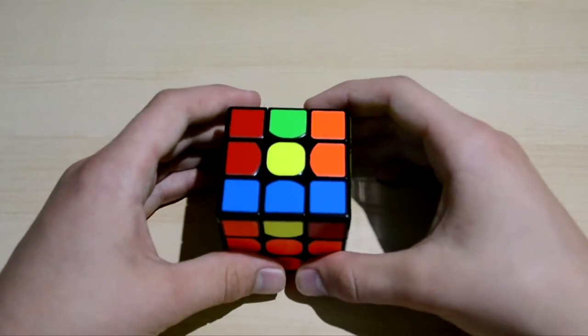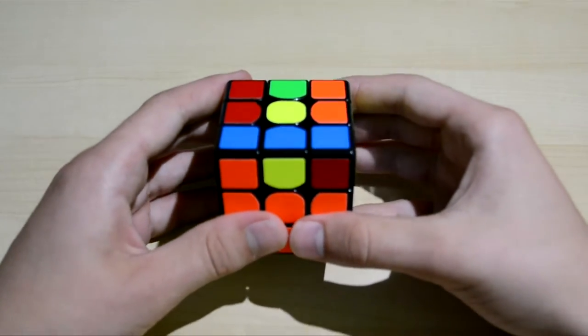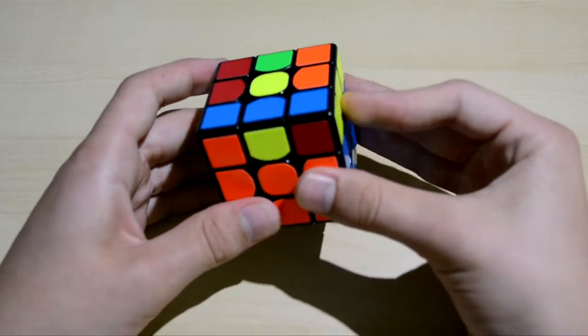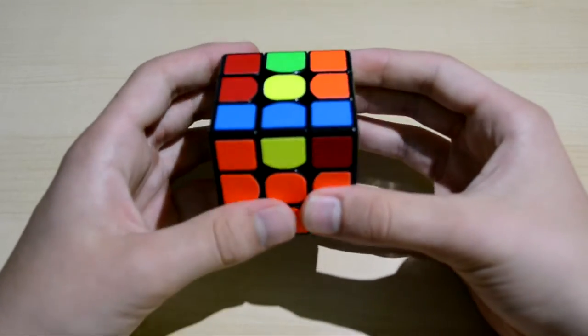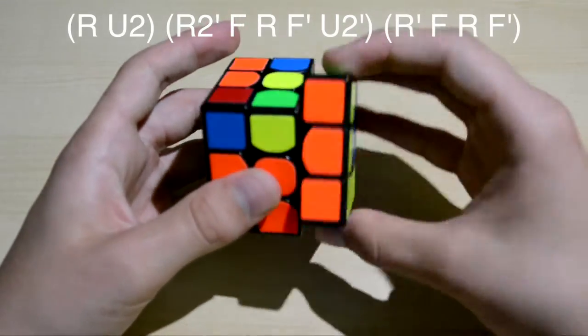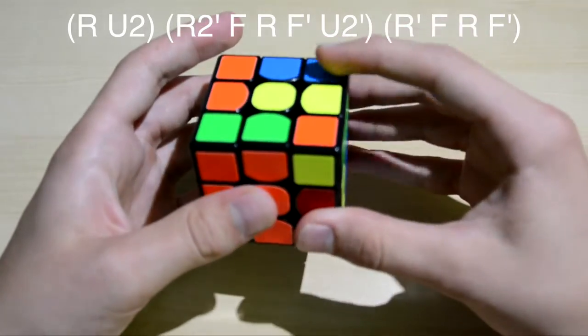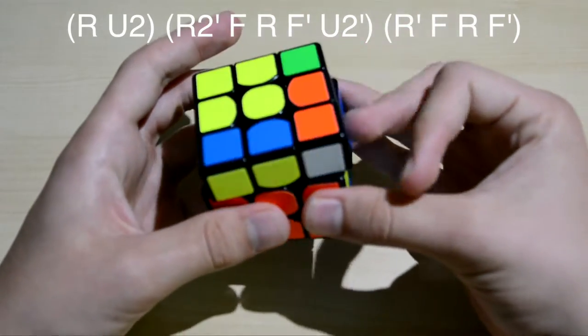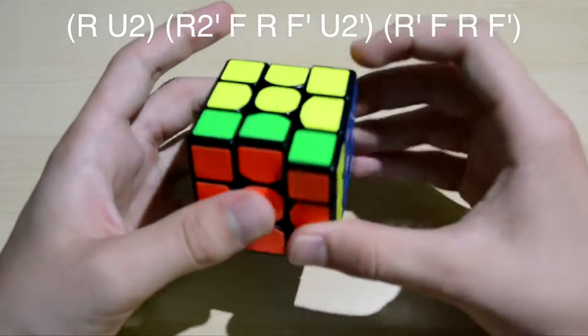To solve this algorithm, you hold the cube like this, with the lines on both sides. Then you perform the algorithm R U2 R2 F R F' U2 R' F R F'.